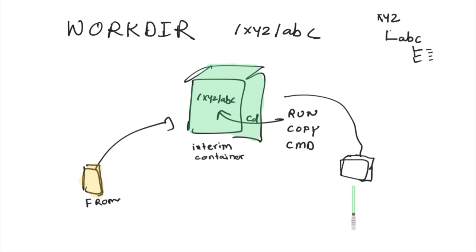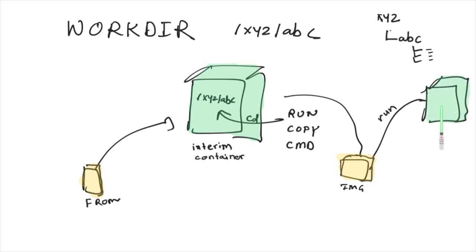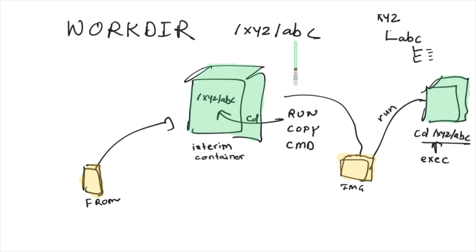WORKDIR is not only used during the build process. Even after you build your image and launch a container with it, you switch to the WORKDIR. So if you exec into a newly created container, you will land in the WORKDIR itself. WORKDIR is used during the build process as well as after launching a container — it defines which directory you land in when you exec into it.